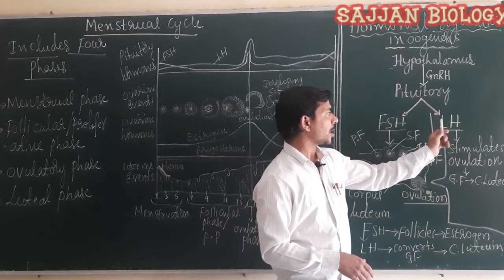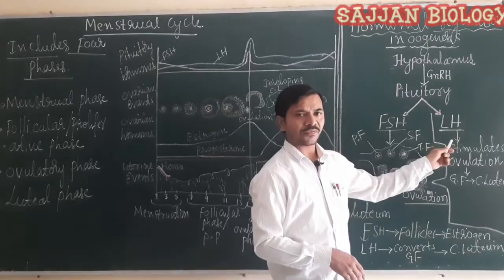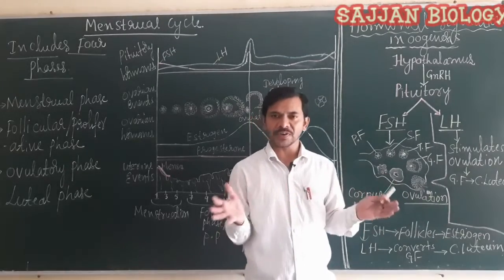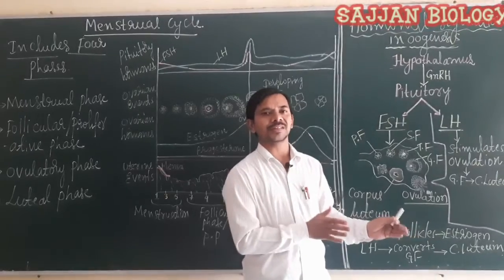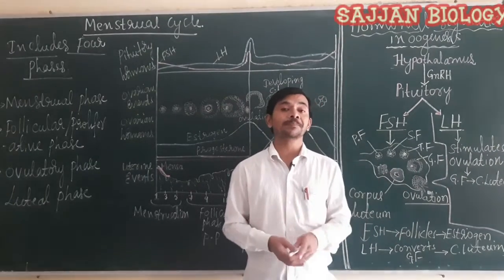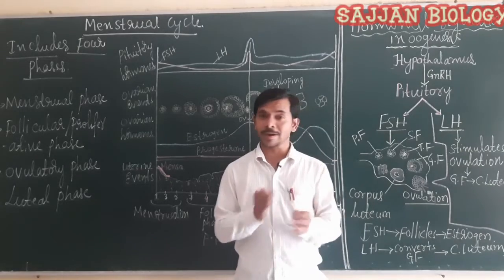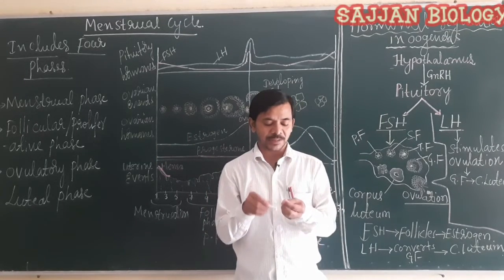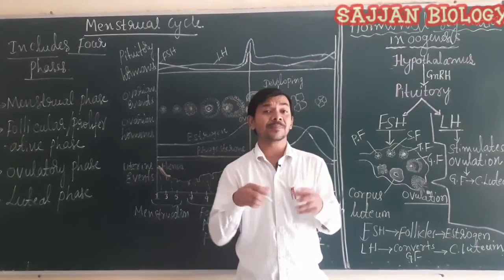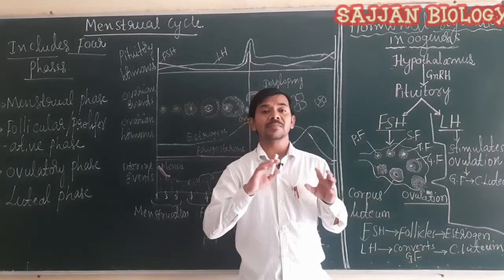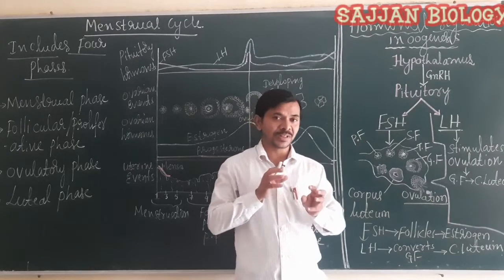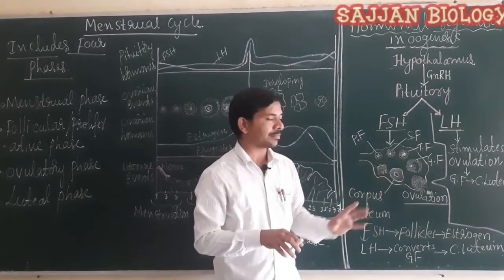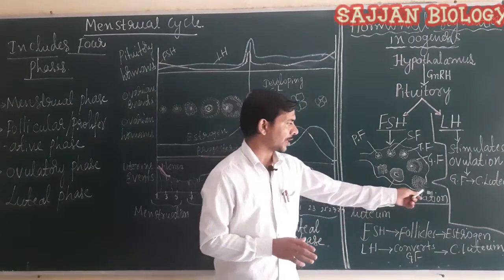LH — the luteinizing hormone — when its level increases in the blood, it induces the surge of ovulation from the Graafian follicle. Muscular fibers around the Graafian follicle contract, causing the induction of ovulation from the Graafian follicle.